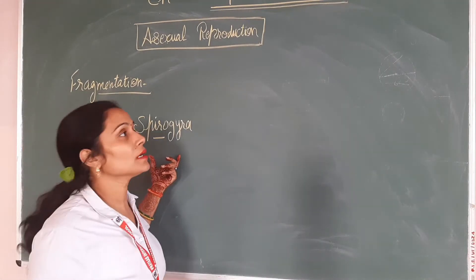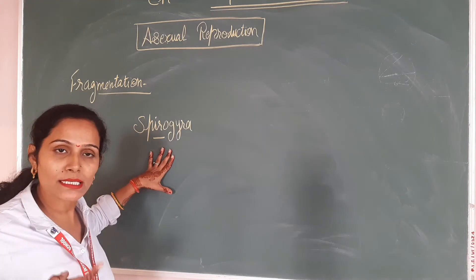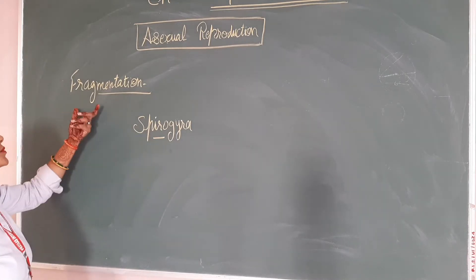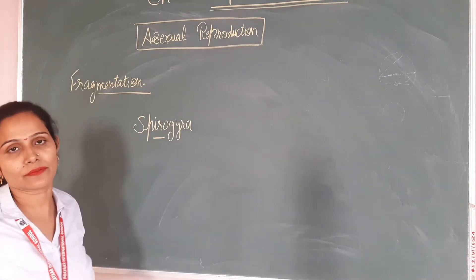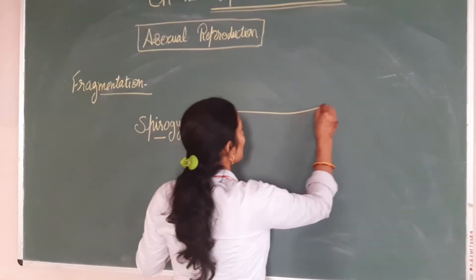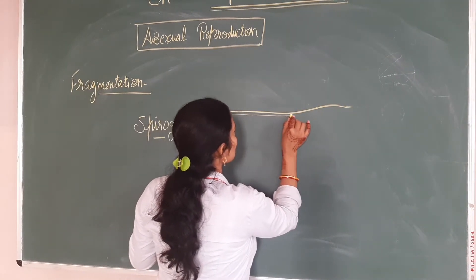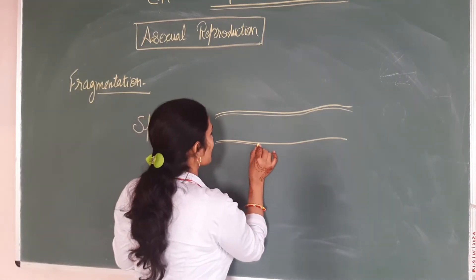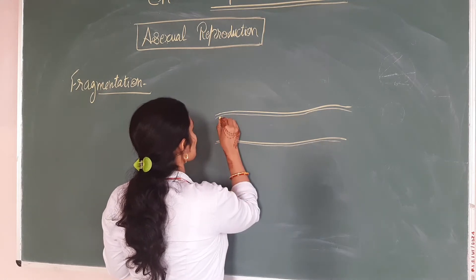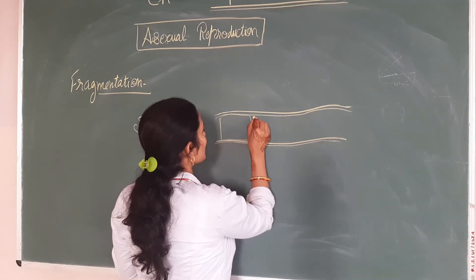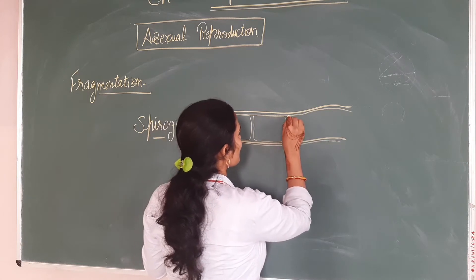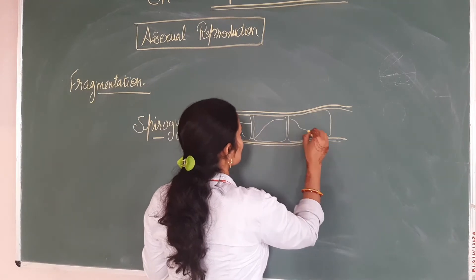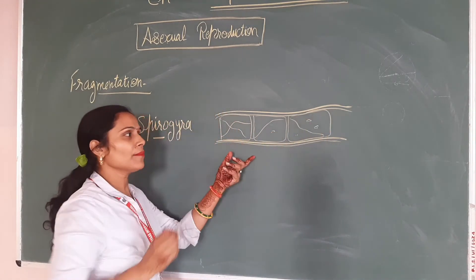Spirogyra reproduces asexually. The method of reproduction in Spirogyra is asexual reproduction, and Spirogyra reproduces by a method called fragmentation. Here is a diagram of Spirogyra.